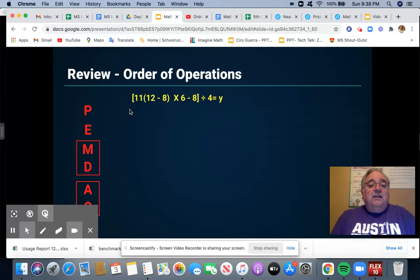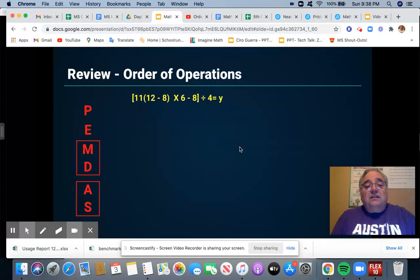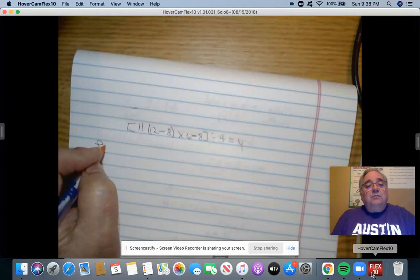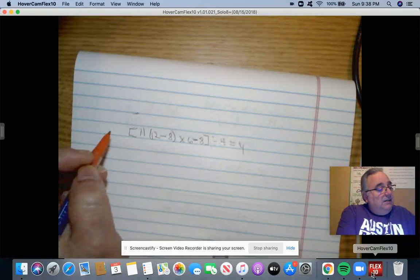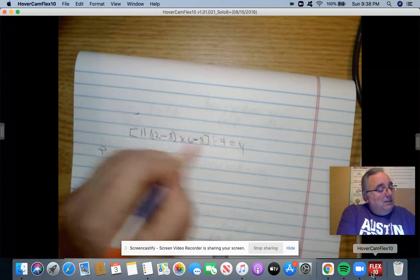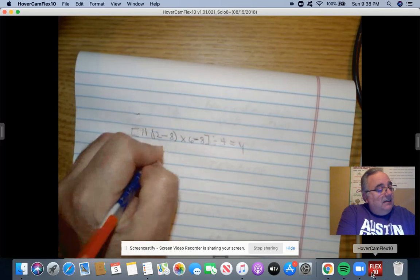The next problem is bracket 11 parentheses 12 minus 8 parentheses times 6 minus 8 bracket divided by 4 equals y. That's a lot there. Let me go ahead and get started. All right. So the first thing we're going to do is look at the parentheses and brackets. So I got brackets here. So do I have any parentheses inside the bracket? Yes. I have the 12 minus 8, which gives me 4.